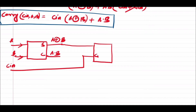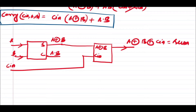The inputs to the second half adder are Cin and A XOR B. So the sum output of the second half adder will be A XOR B XOR Cin, which is the final sum output of the full adder. The carry output of the second half adder will be (A XOR B)·Cin, which is present in our carry equation.